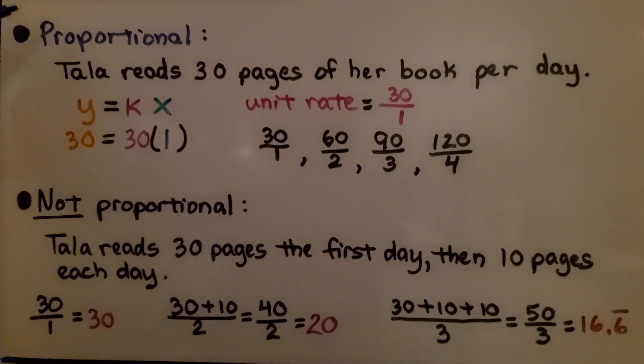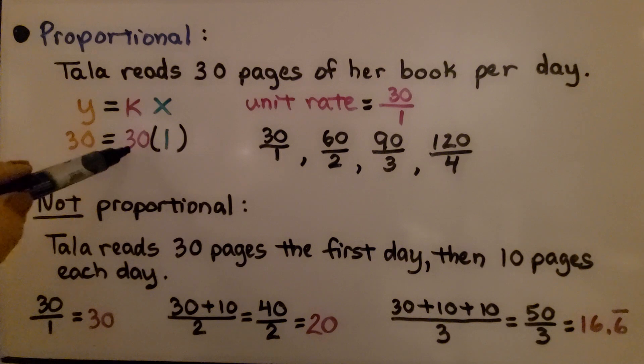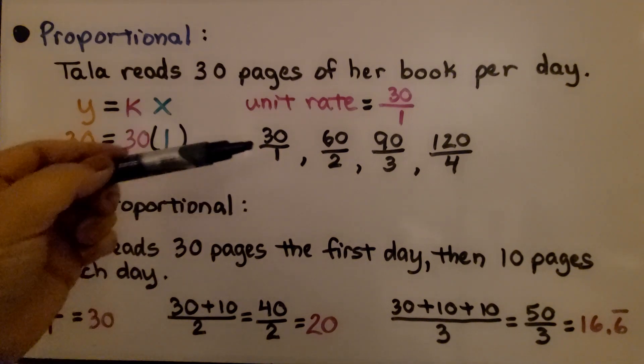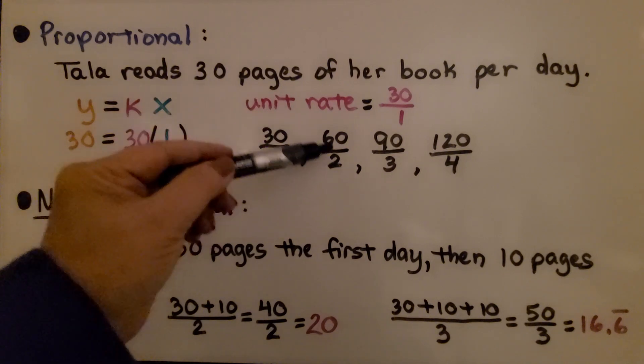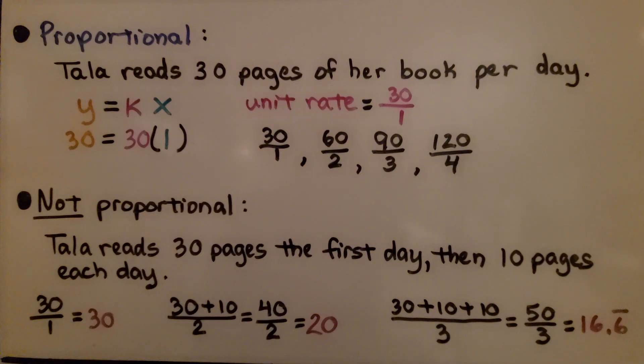This is an example of proportional: Tala reads 30 pages of her book per day. For y equals kx, we'd have 30 pages equals the unit rate 30 over 1, which equals 30. That's our k, per day. The first day she'd read 30 pages, the second day 60, the third day 90, the fourth day 120. For each one of these, k equals 30.